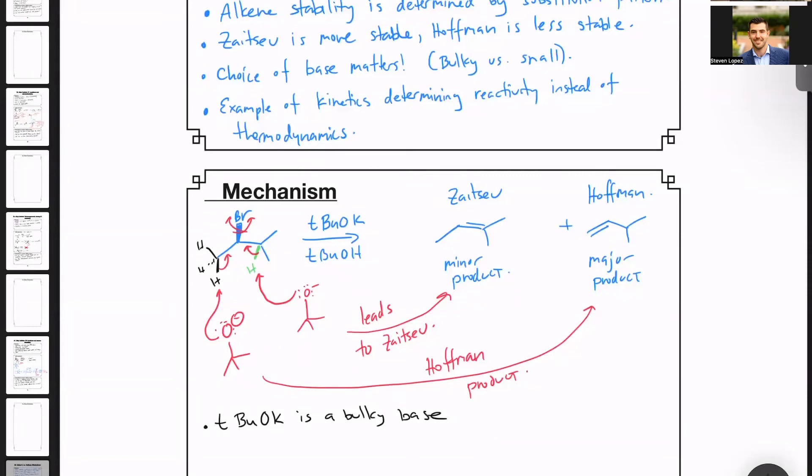In contrast, the same bulky base, if it's trying to get into the space where it can deprotonate the green hydrogen, this has a much more sterically crowded environment, and the transition state energy for this process will be a lot higher for the green hydrogen than that for the black.